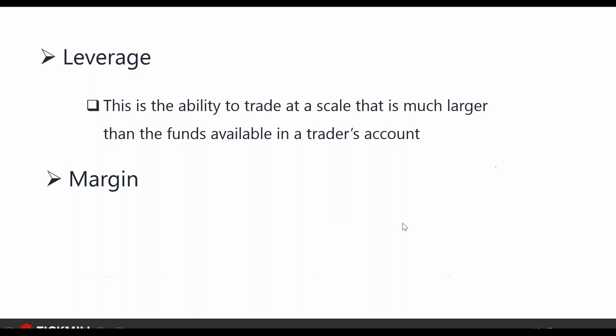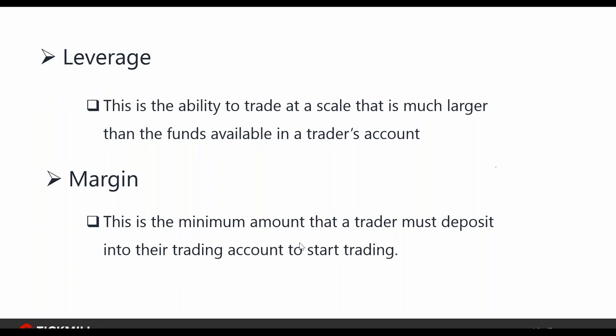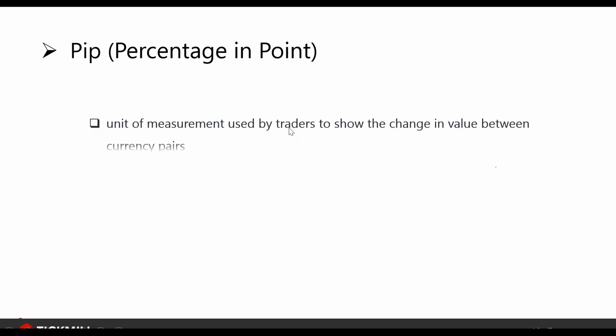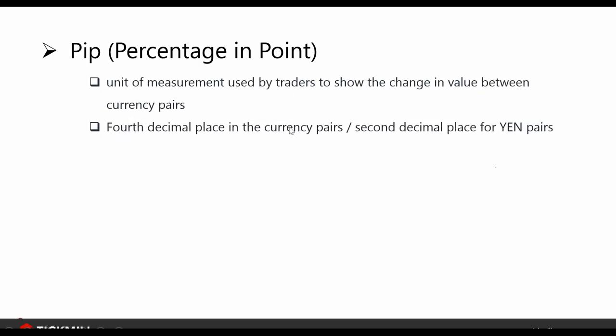Margin is the minimum amount a trader must deposit into the trading account to start trading — it's the amount required to open a trade. PIP, or Percentage in Point (also called Price and Point), is the unit of measurement used by traders to show the change in value between currency pairs. It's the fourth decimal place in currency pairs and the second decimal place for yen pairs and other pairs like gold (XAUUSD).